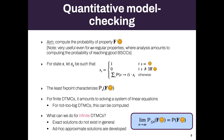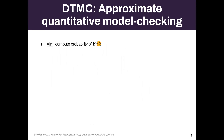The probability of reaching a target is either you reach it in one step, two steps, three steps, and so on. This limit property holds. How do we use this to obtain an approximate algorithm for quantitative model checking?